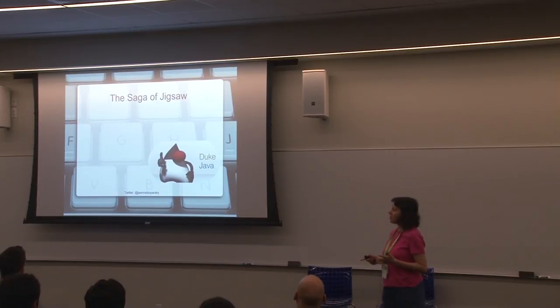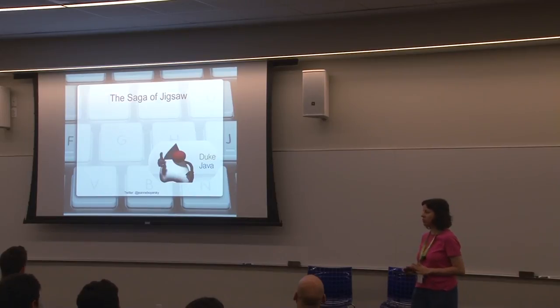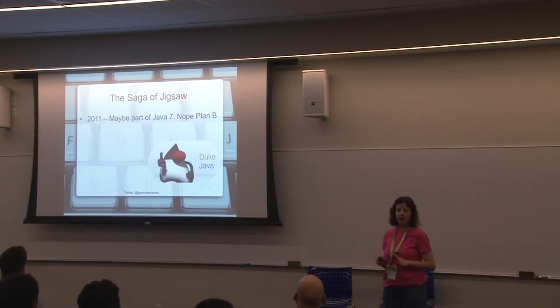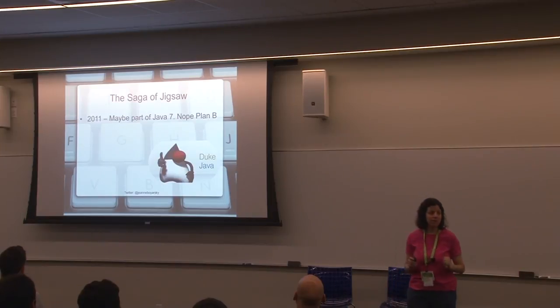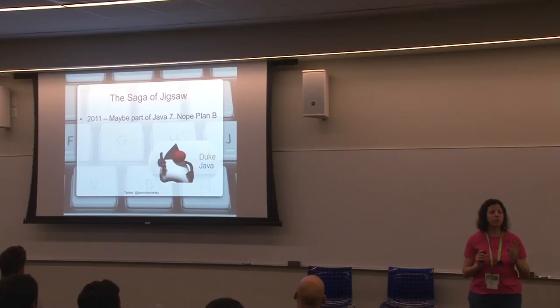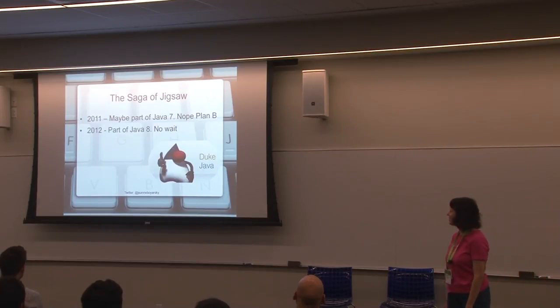Now, let's look at Jigsaw's release, because it's fun to see how many times they've attempted to release this product. The first discussion was with Java 7. We're going to have a plan A and a plan B. Plan A, we're going to get it released with Java 7. Plan B, no worries if we can't do that, we'll get it released with Java 8. We all saw that happen, we're using Jigsaw, and we all lived happily ever after. The end. No, of course not.